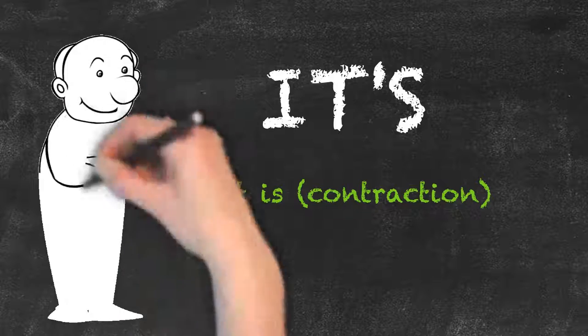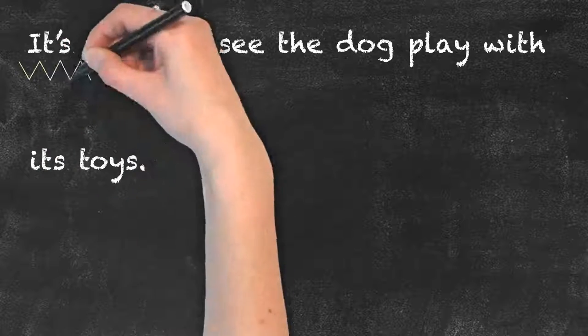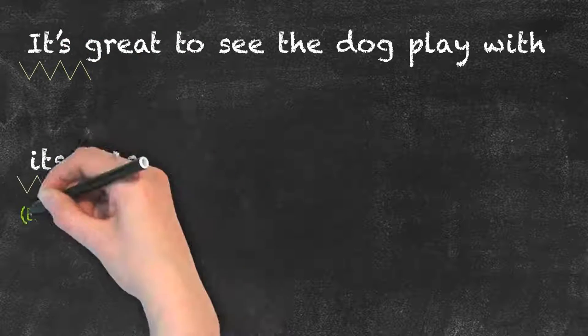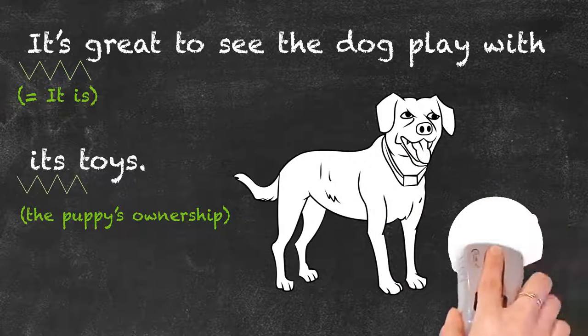Let's take a look at this example sentence. It's great to see the dog play with its toys. It's at the beginning of the sentence is a contraction, while its at the end is used as a possessive adjective.